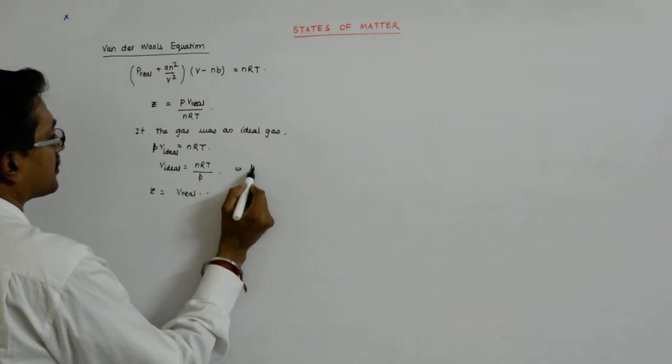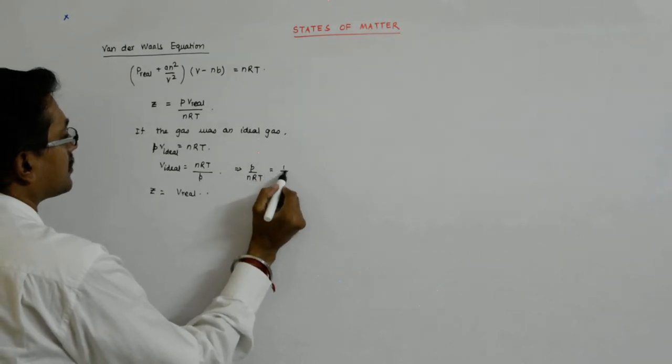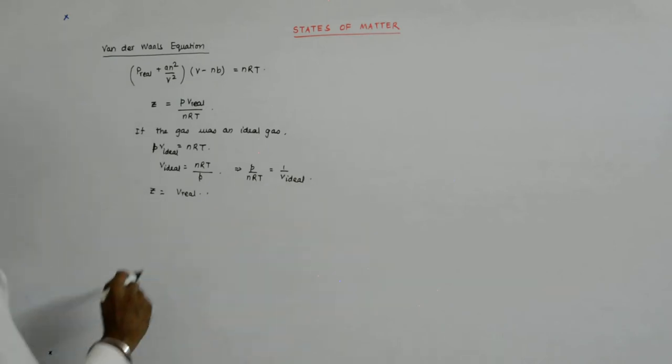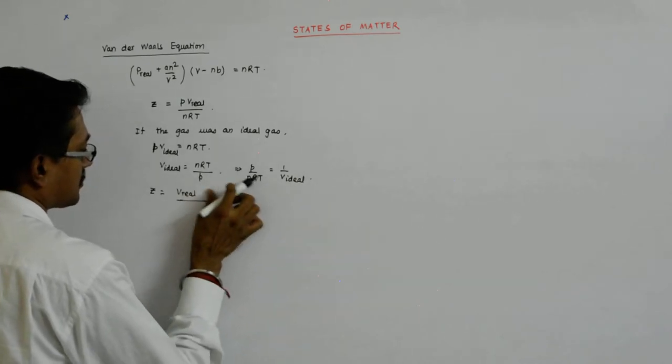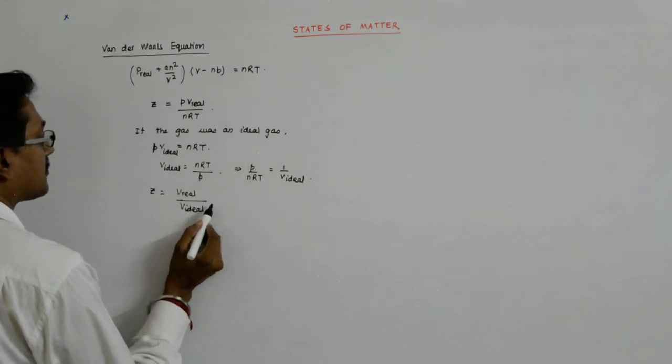It implies that P upon nRT is equal to 1 upon V ideal. So this is this upon V ideal.